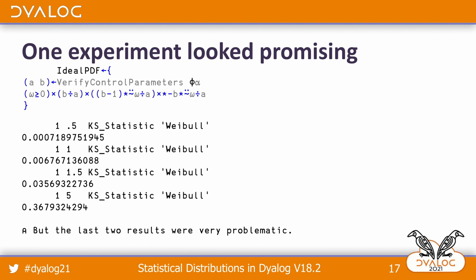One speculation I had is perhaps they just reversed the parameters. So I tried modifying our ideal PDF expression to do exactly that, and then I did a comparison between our statistic and the ideal statistic. The first case I tried looked pretty good. The second case is moderately okay, but the third and fourth are really bad — a KS statistic of 0.367 is just bad.